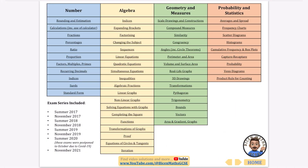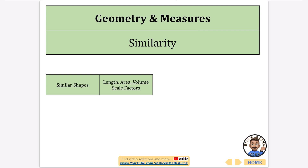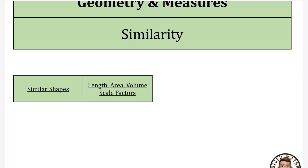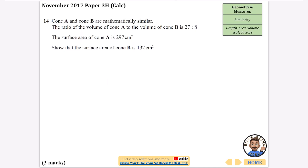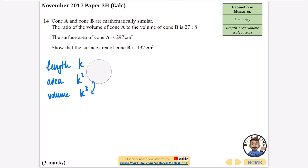In this video I'm continuing with every question that has ever been asked on similarity. The document is linked in the description — I've already covered similar shapes in the first one, so now I'm concentrating on length, area, and volume scale factors. A quick reminder: if the length scale factor is k, the area scale factor is k squared, and the volume scale factor is k cubed.